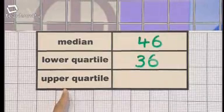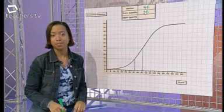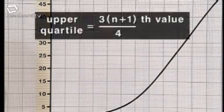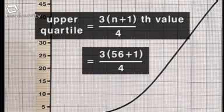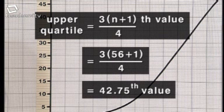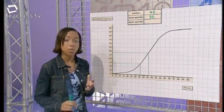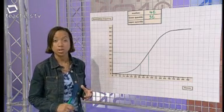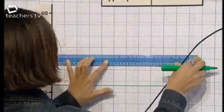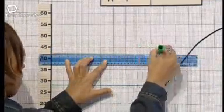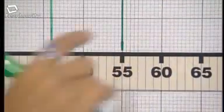Finally, the upper quartile. The upper quartile is 3 quarters of the way into the data. Its exact position is found using this formula. 3 quarters of 57 is 42.75. Or, to keep things simple, you can approximate by finding 3 quarters of 56, which is 42. To find the upper quartile, read across from 42 on the vertical axis, and then down, so the upper quartile is 55.